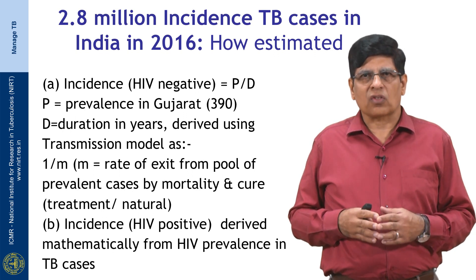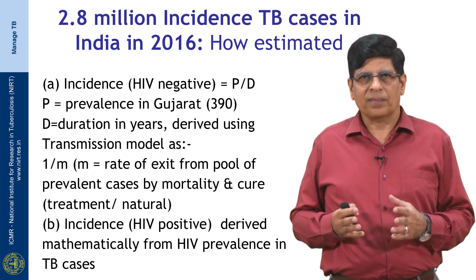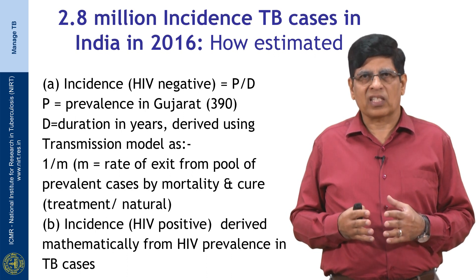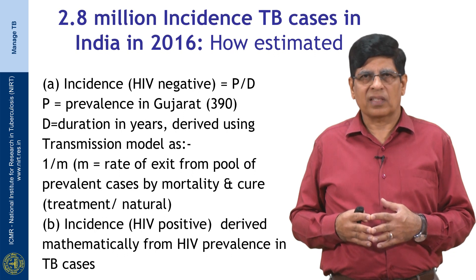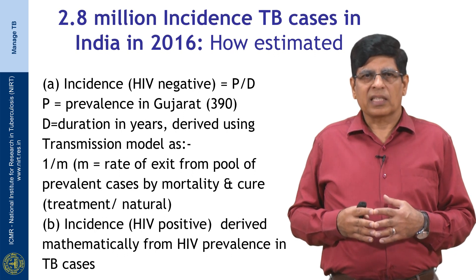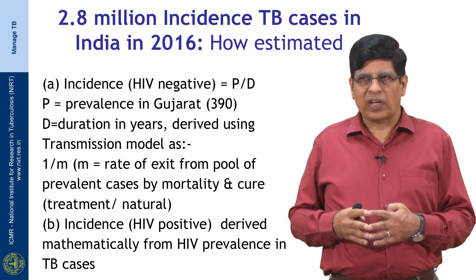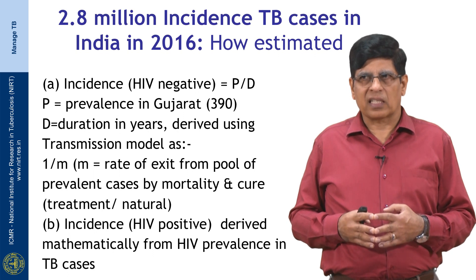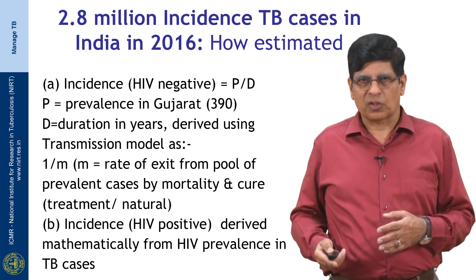The current estimates of incidence in TB are based on the formula: incidence equals prevalence divided by duration. The prevalence was obtained from a statewide survey recently conducted in Gujarat, and duration was estimated using transmission modeling.